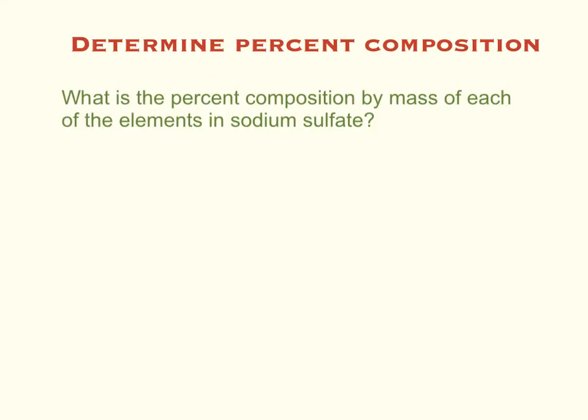So here's another problem. What's the percent composition by mass, or mass percent, of each of the elements in sodium sulfate? First thing we have to do is we have to write the formula for sodium sulfate. Sodium is Na. Sulfate is SO4 from the back of our periodic table. We check the charges on this, and Na's got a plus 1. SO4's got a minus 2. So it is Na2SO4 is the correct formula.